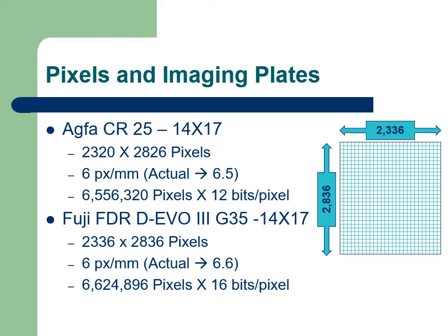On the other hand, a Fuji DR plate is made up of 6,624,896 small radiation detectors. For a DR plate, the size of the pixel is determined by the manufacturer during fabrication. Each detector is capable of recording 16 bits per pixel, or 65,536 different radiation levels. These radiation levels range from 1 one-hundredth of a millisievert to some maximum value.